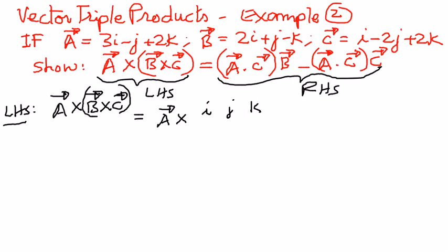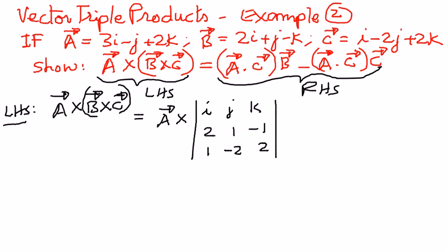For vector b, the coefficient of i is 2, j is 1, and k is negative 1. For vector c, the coefficient of i is 1, j is negative 2, and k is 2. We want to find the determinant of this matrix and then cross it with vector a.